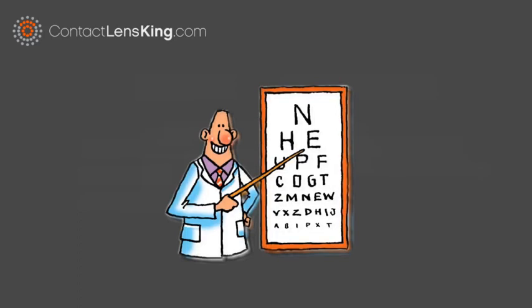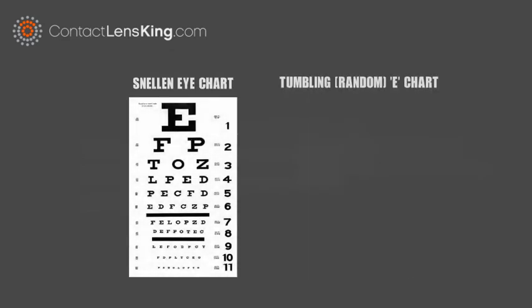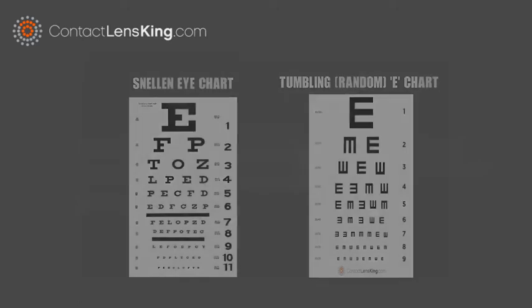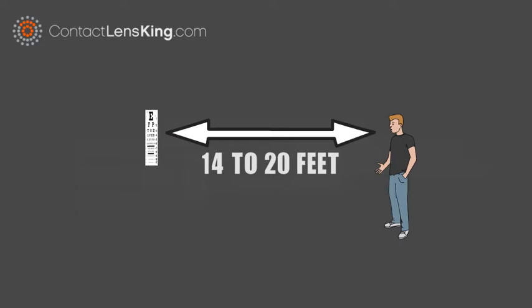When taking a visual acuity test, there are two commonly used versions: the Snellen and the Tumbling or Random E test. For these tests, a subject stands 14 to 20 feet away to read the charts from each eye while covering the other eye.